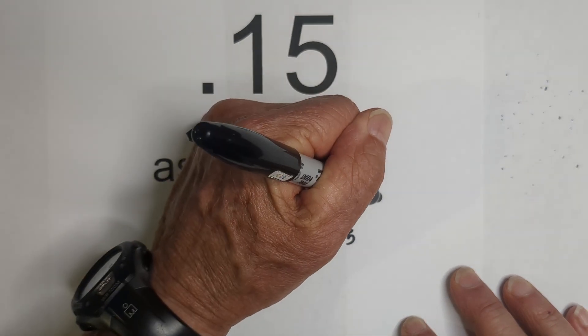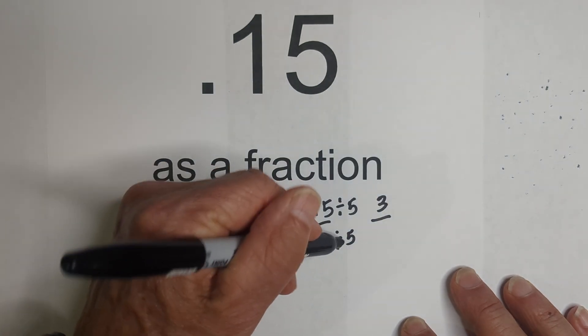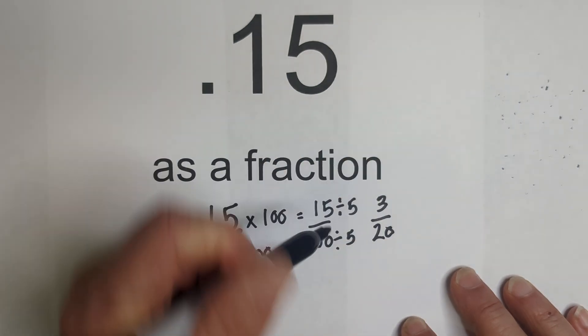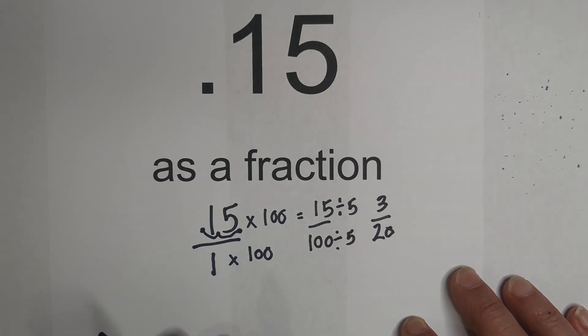15 divided by 5 is 3, and then 100 divided by 5 is 20. 3 is a prime number, so I know I'm down to its simplest form.